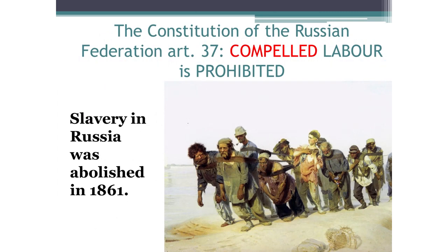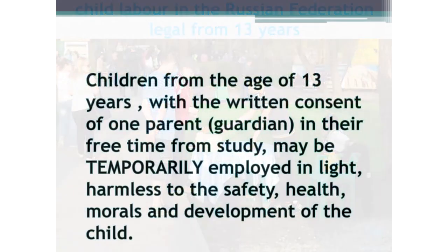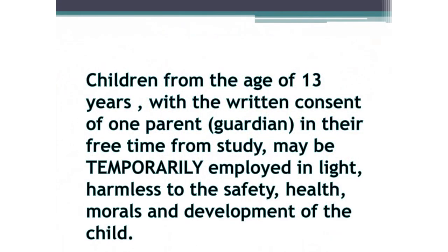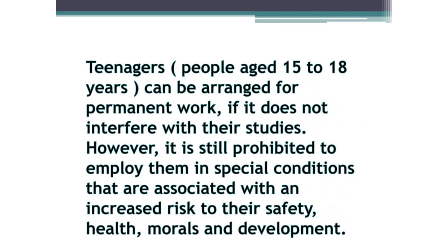Forced labor is prohibited in the Russian Federation — slavery in Russia was abolished in 1861. People can legally work from the age of 13, but only with written consent from parents or guardians, only during time free from study, and such work must be temporary and safe for the health and development of the child. Starting from the age of 15, you can get a permanent job if it does not interfere with studies. Teenagers are prohibited from working in conditions of increased health risk.